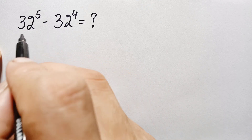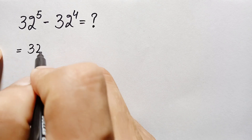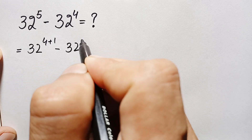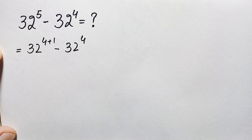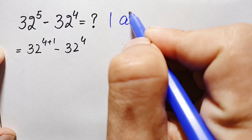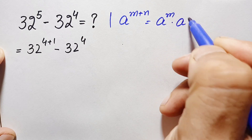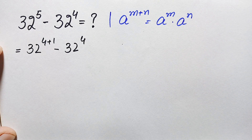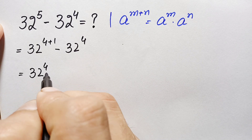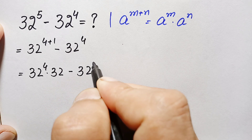How can we solve this math problem? First of all, we can write the first term: 32 raised to power 5 can be written as 32 raised to power 4 plus 1 minus 32 raised to power 4. In the first term, we will use the exponential identity a raised to power m plus n equals a raised to power m times a raised to power n. So using this identity, the first term becomes 32 raised to power 4 times 32 raised to power 1, or simply 32, minus 32 raised to power 4.